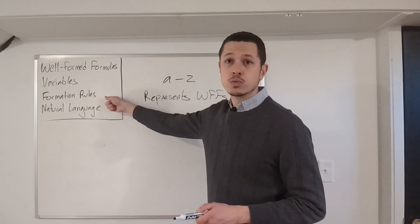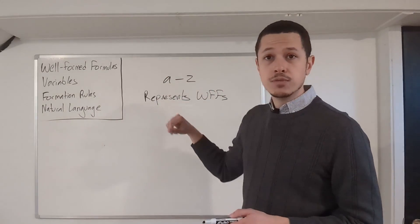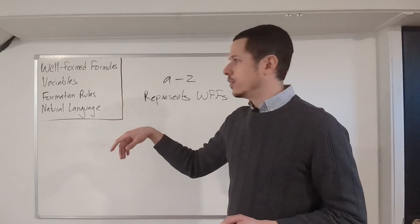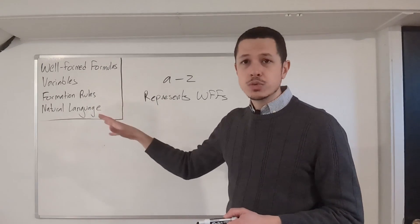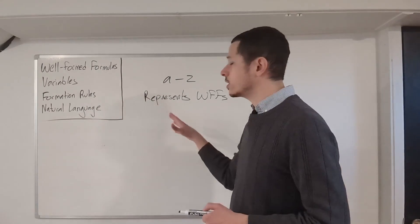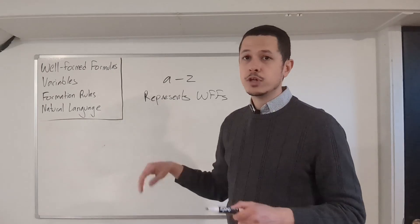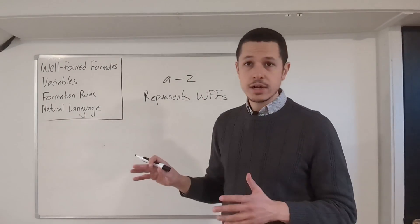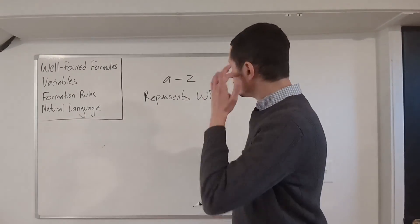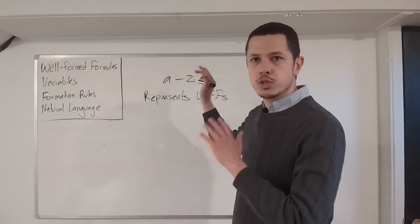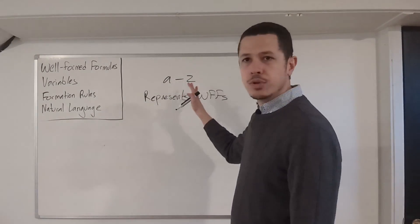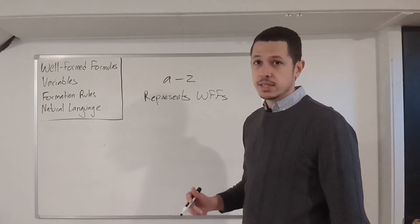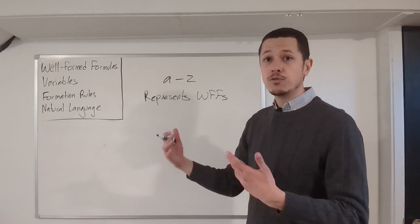We use these lowercase letters to make our lives much easier when we're learning things about statement logic. When we're learning about the formation rules, we're going to write those out in terms of these lowercase letters. Also, when you're learning about the derivation rules for proofs or how truth functional connectives work in truth tables, we'll do all of those things with lowercase letters. So that's all these are for — just to make our lives easier. They aren't actually a part of the language itself, and every single one of these lowercase letters stands for a well-formed formula.